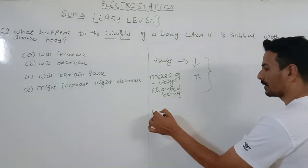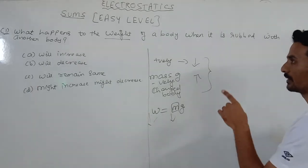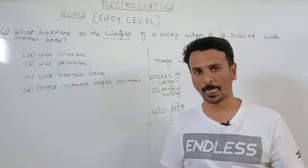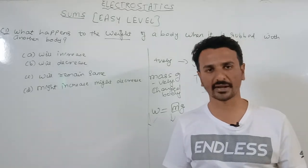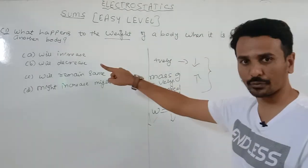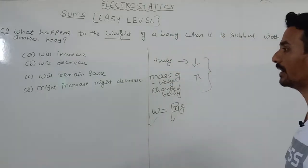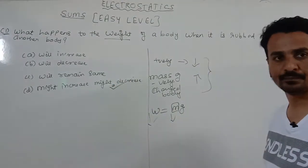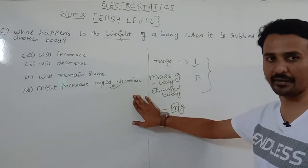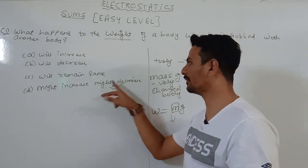Since weight equals m times g, if mass decreases, weight will also decrease. But in this question they have not mentioned which body they are talking about. For example, when a glass rod is rubbed with a silk cloth, the glass rod acquires positive charge and the silk cloth acquires negative charge. Since the type of body is not specified, the answer is might increase or might decrease.